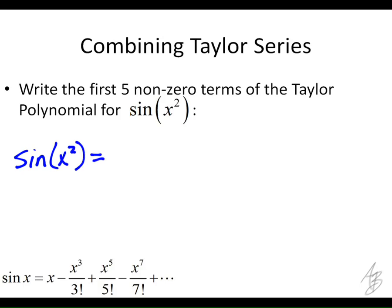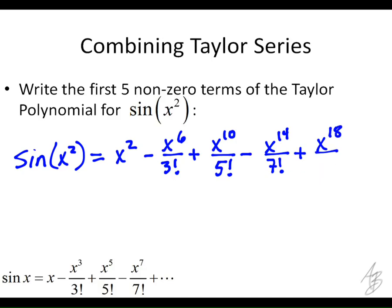Anywhere we see an x we're going to put an x squared. So the first term instead of x is x squared. Second term instead of x cubed is x to the 6th. So we get x squared minus x to the 6th over 3 factorial plus x to the 10th over 5 factorial minus x to the 14th over 7 factorial plus x to the 18th over 9 factorial and so on.